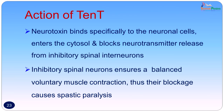Once it reaches the cells of the brain and spinal cord, it binds specifically to neuronal cells, enters the cytosol, and blocks neurotransmitter release. Acetylcholine is normally released and is responsible for transmission of impulses from upper motor neurons to lower motor neurons. This release of acetylcholine is inhibited because the sites are bound by the neurotoxin, and thus the inhibitory control of the spinal interneurons is removed. Inhibitory spinal neurons normally ensure balanced voluntary muscle contraction; their blockage causes spastic paralysis — the muscle cannot relax between contractions.